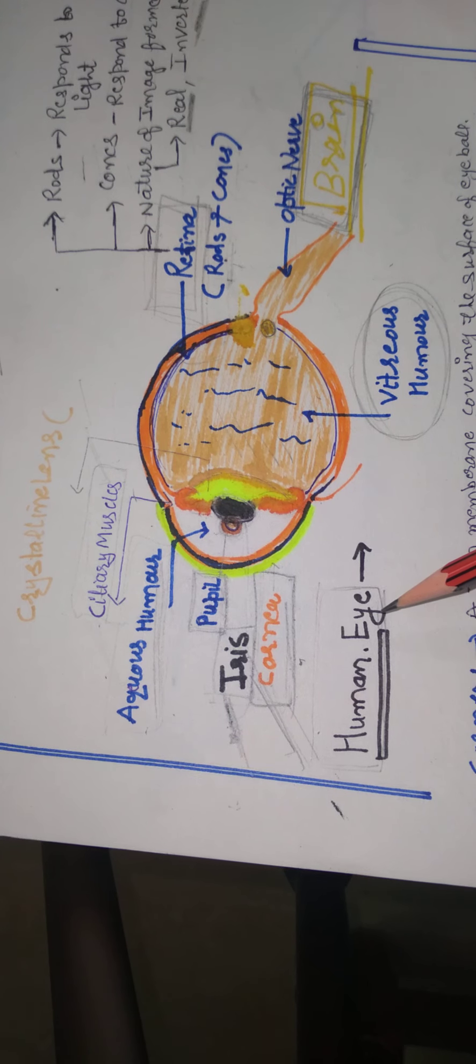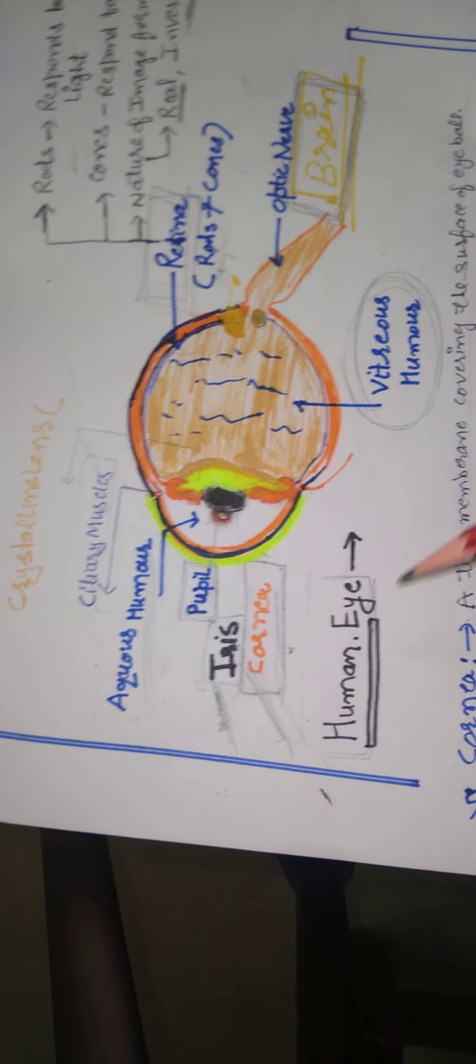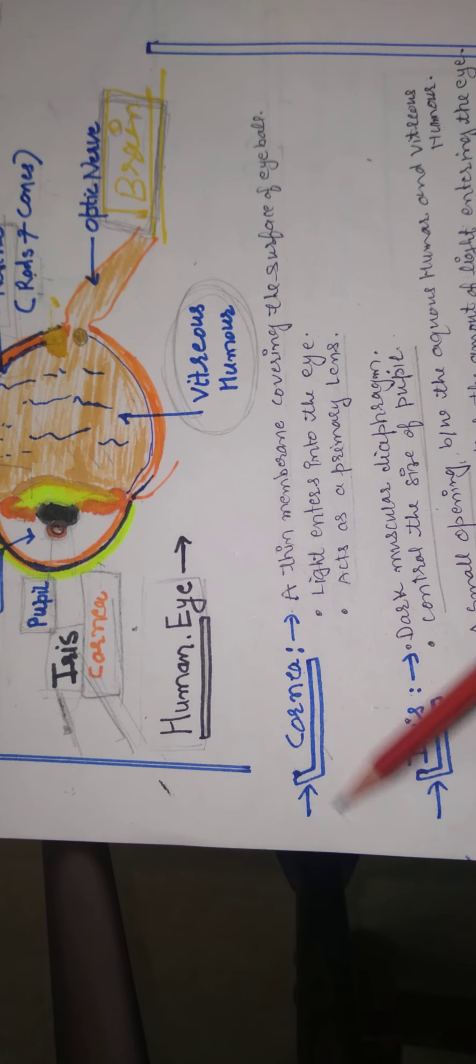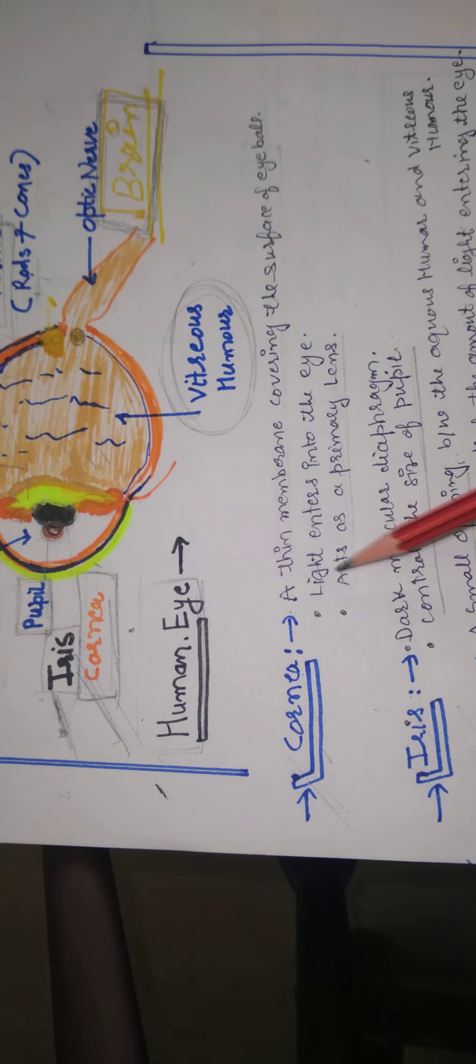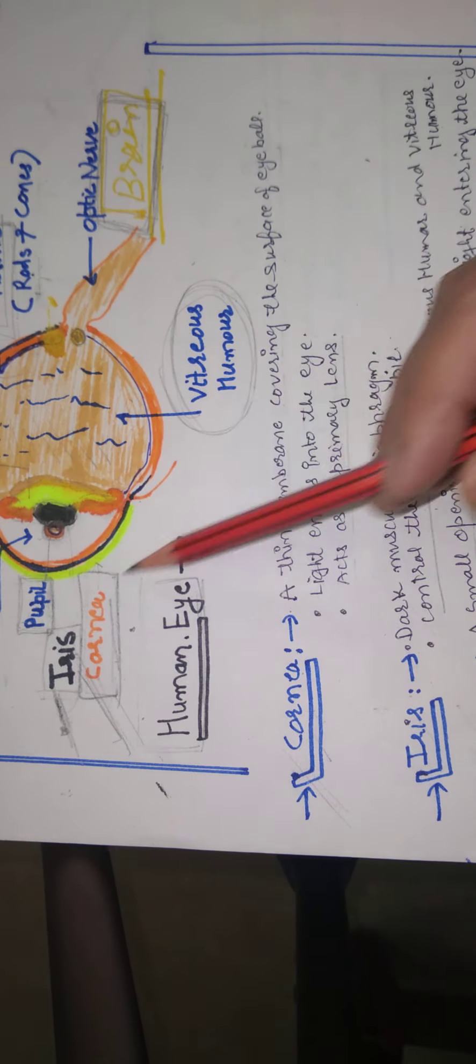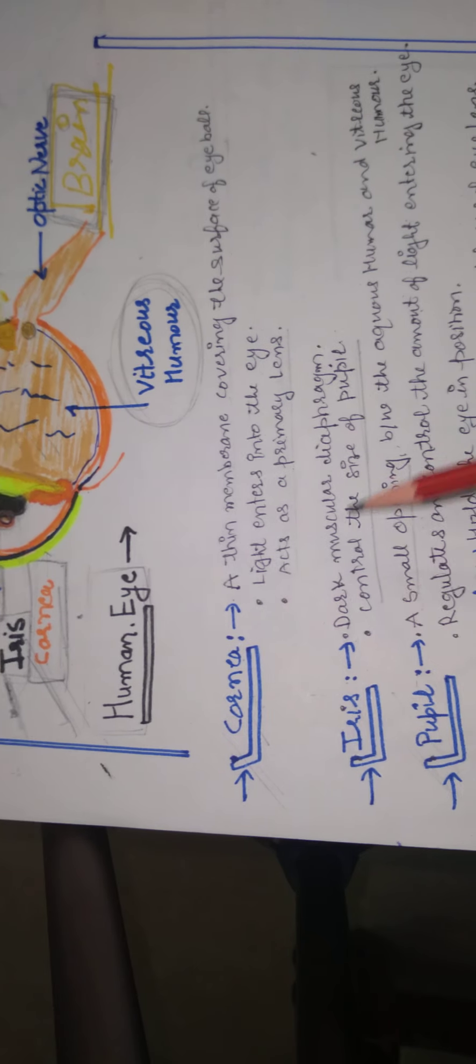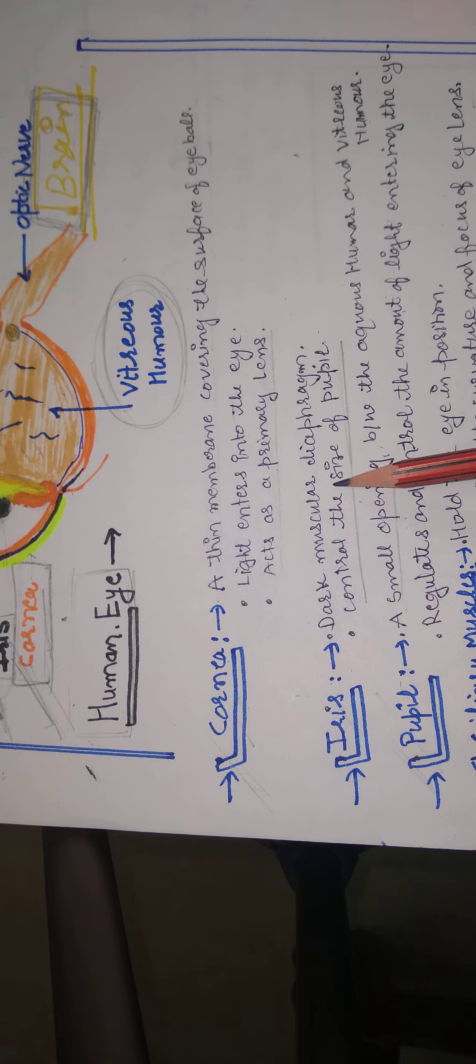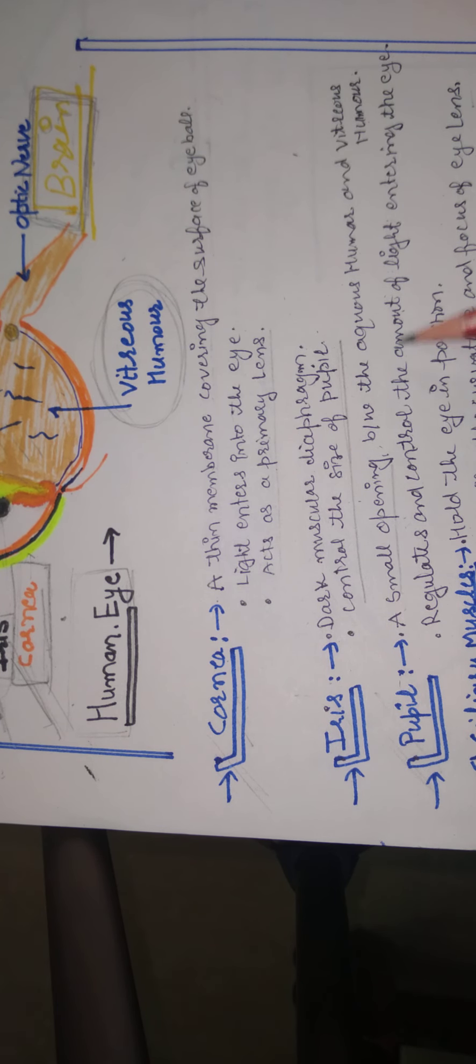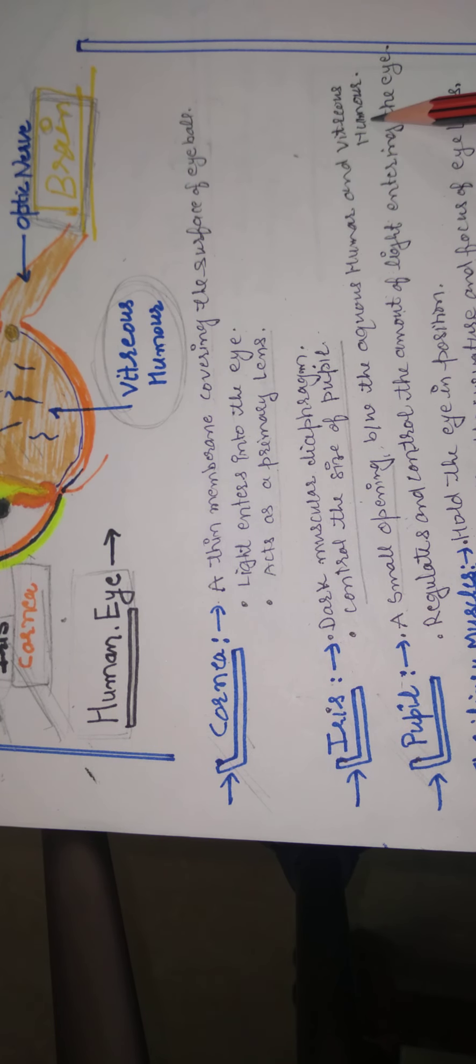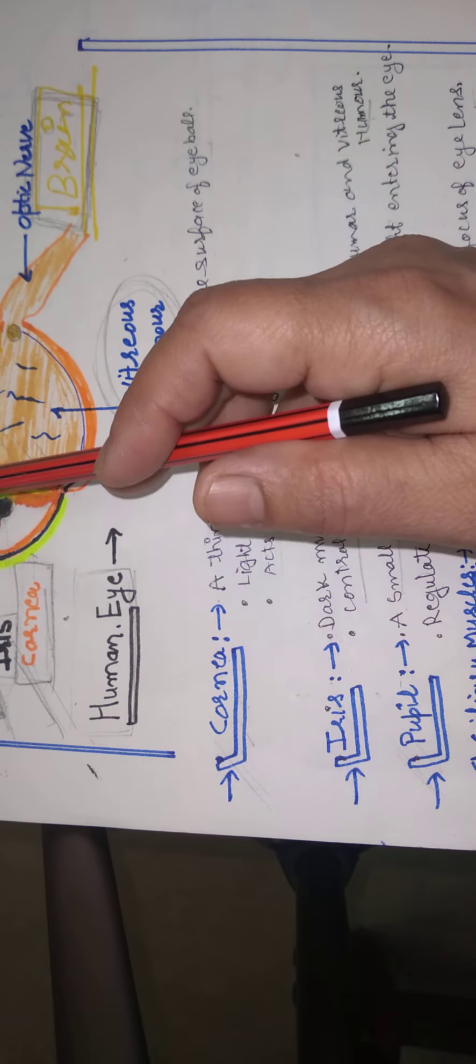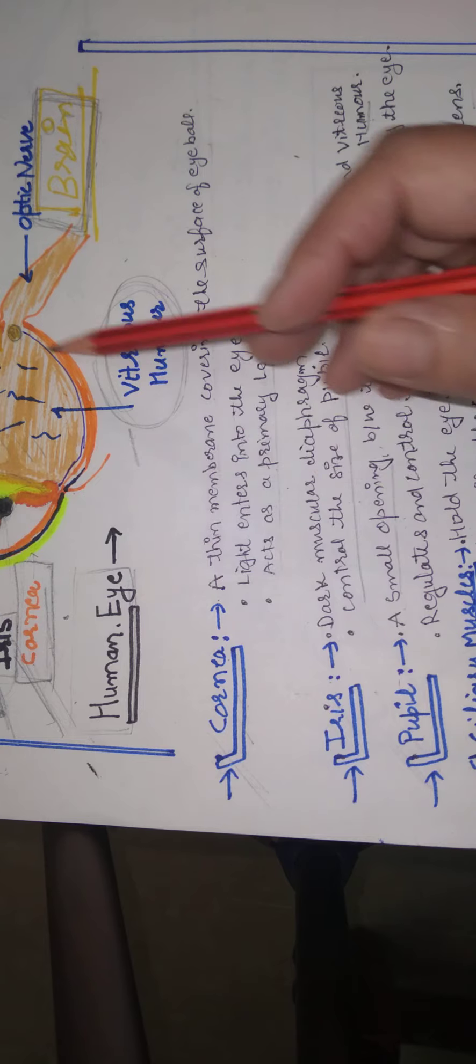We have discussed them one by one. Now here are some definitions. You can note it. Thin membrane covering the eyeball: cornea. Then iris: dark muscular frame, controls the size of the pupil. Pupil: small opening between aqueous humor and vitreous humor. Vitreous humor function: retina turgidity provide.